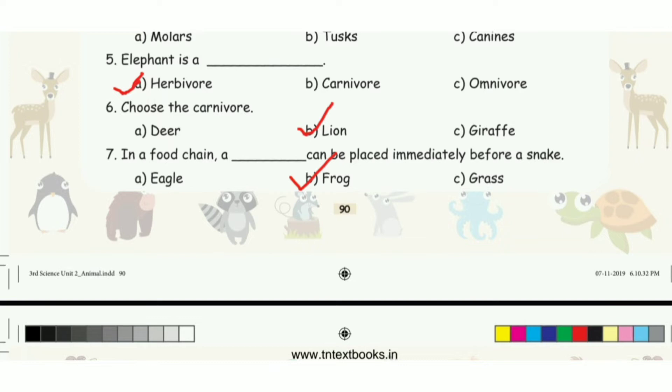Seventh question: in a food chain, which animal can be placed immediately before a snake? The answer is option B, frog.